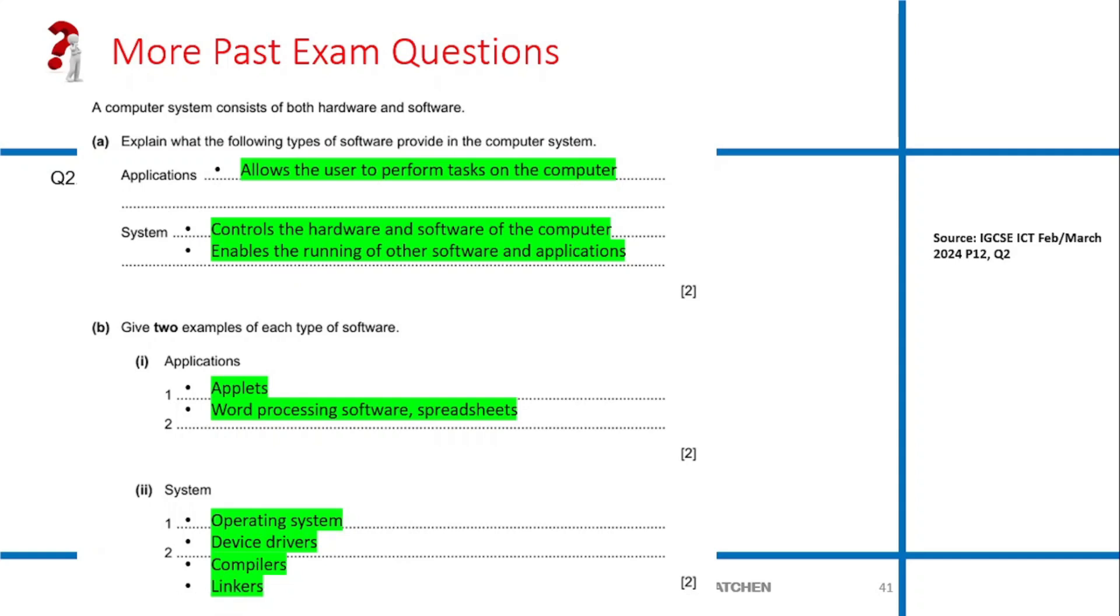System software controls the hardware and software of the computer, so it enables running of other software. When you talk about system software, those are programs that kind of control how the computer system actually performs. It gives an enabling environment for the application software. Like your operating system is system software - it gives an enabling environment for applications like Microsoft Office, Adobe Illustrator, Photoshop, and all those things. Give two examples of each type of software. Application: applet, word processing software, spreadsheet, computer-aided design software. System software: operating system, device drivers, compilers, linkers.